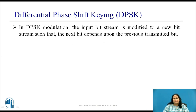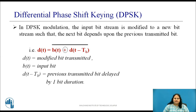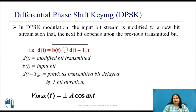In the previous session we discussed DPSK modulation technique. We know that in DPSK modulation, the input bit stream is modified to a new bit stream such that the next bit depends upon the previous transmitted bit. It is represented by the expression D(t) = B(t) XOR D(t − Tb). And to this modified bit stream PSK is applied, which gives V_DPSK(t) = ±A cos(ωc·t).